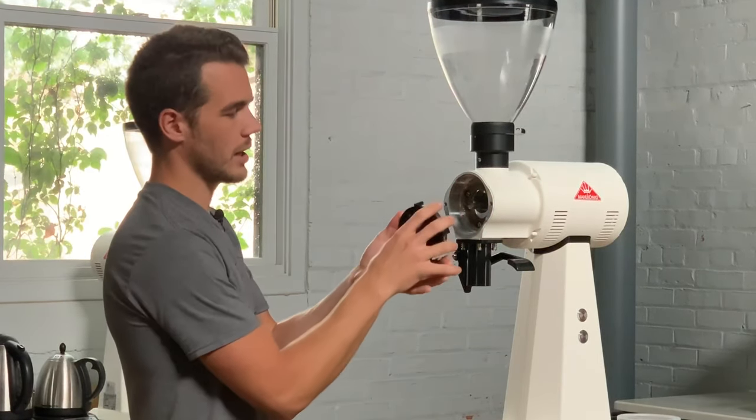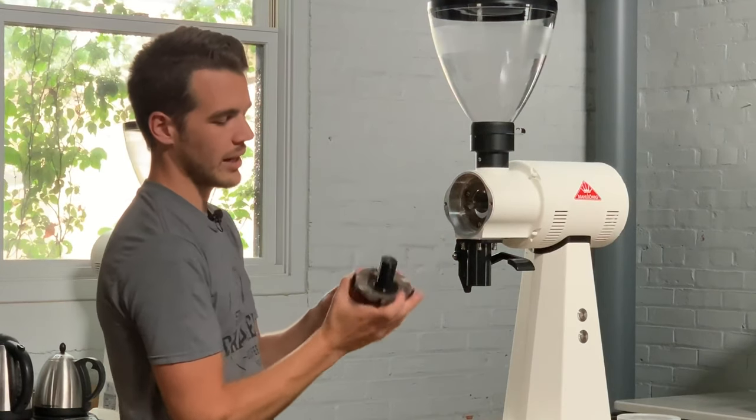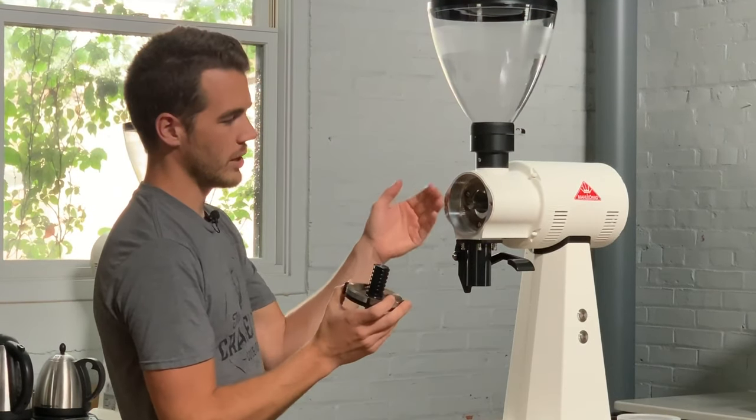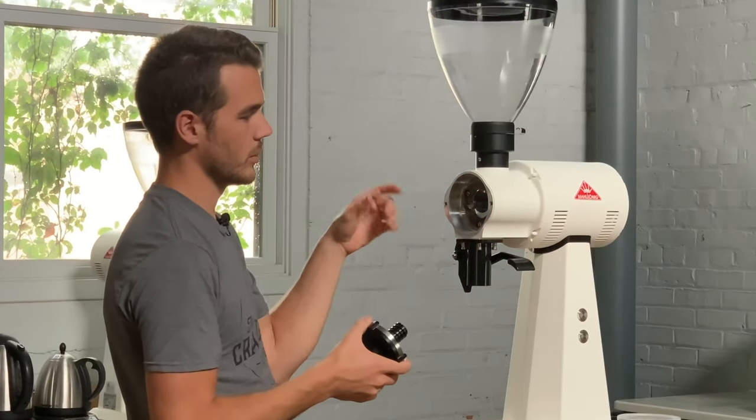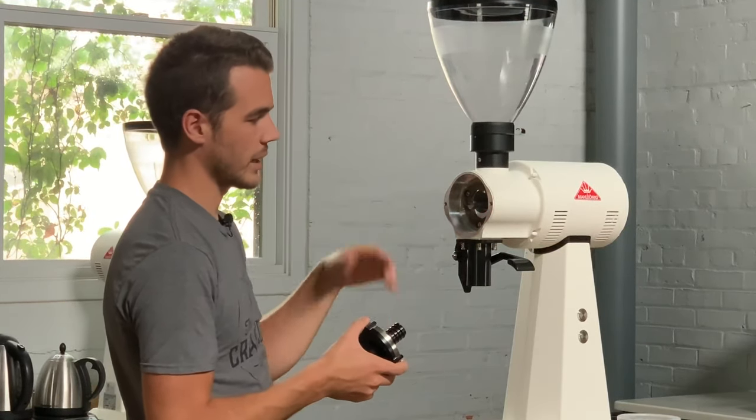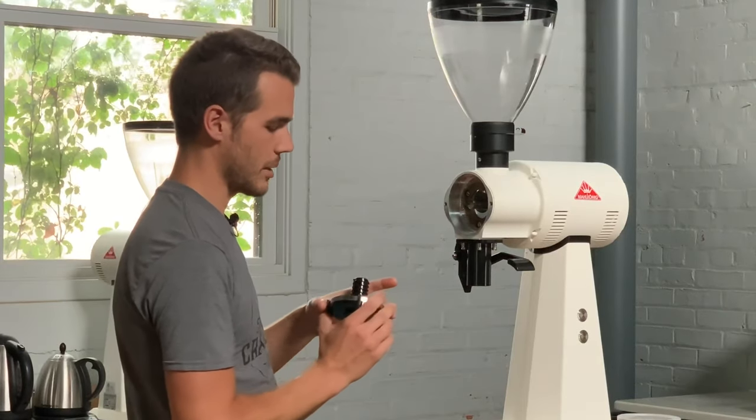So once you take that burr carrier out, you have access to the outer burr and the inner burr. If there's coffee in there, if you had a clog or something, you'll be able to either sweep that out or shop vac it out and clean everything up.